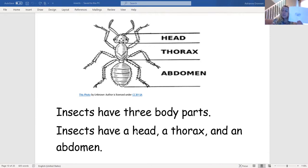This page says insects have three body parts. Insects have a head, a thorax, and an abdomen.